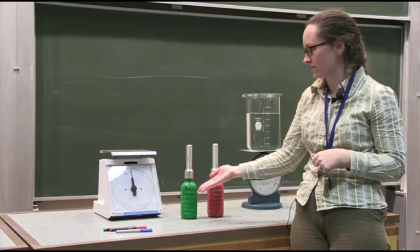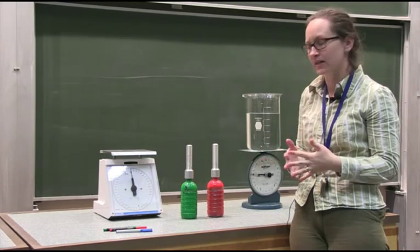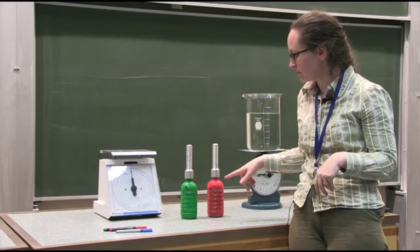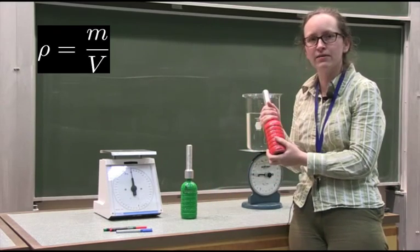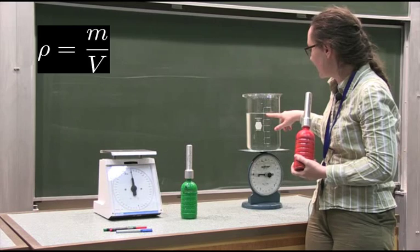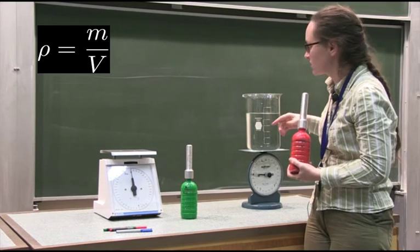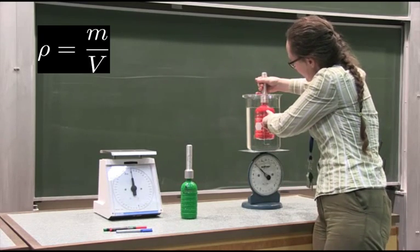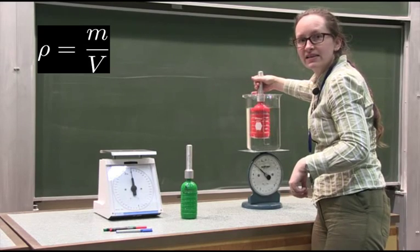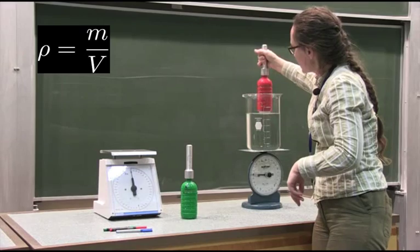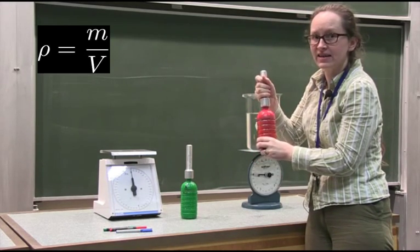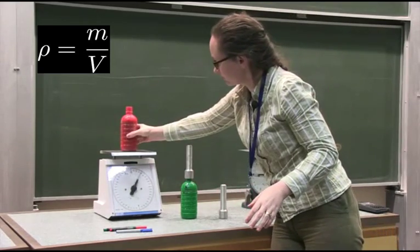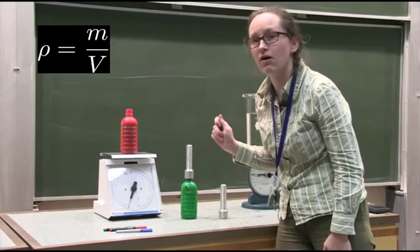Let's measure the density of a green bottle and a red bottle. To measure density, we need to work out the mass and volume of each bottle. Using Archimedes' method, we work out the volume of water displaced when we submerge the bottle. The beaker currently shows 3,000 millilitres of water. When we submerge the red bottle, it reads 3,600 millilitres. So the red bottle has a volume of 600 millilitres. Its mass is 1.2 kilograms.